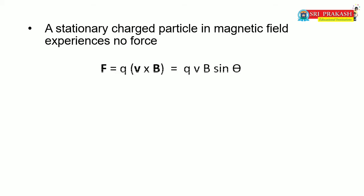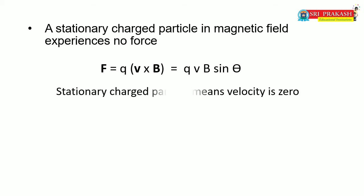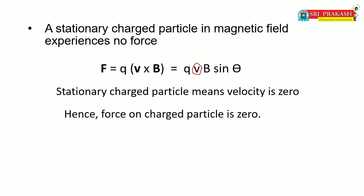A stationary charged particle in a magnetic field experiences no force. Using the equation F = Q(V cross B) or QVB sinθ, a stationary particle means velocity equals zero. Substituting zero into the equation, zero multiplied by anything is zero. Hence, the force on the stationary charged particle is zero.